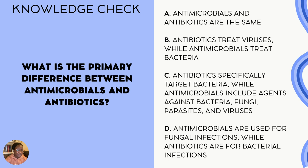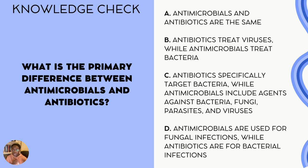I will be sharing the answer with you soon. Please go ahead and pause the video and get your answer in mind. The correct answer is C — antibiotics are specifically designed to target bacteria while antimicrobials include agents against bacteria, fungi, parasites, and viruses. This is correct because antibiotics are a subset of antimicrobials that specifically target bacterial infections. Option D is incorrect because antimicrobials also include agents for viruses and parasites, not just fungal infections.